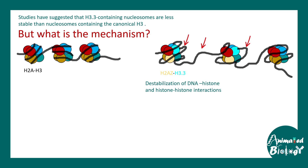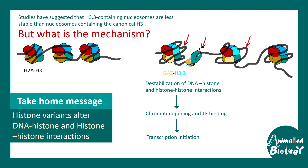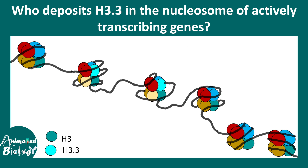As a result, the DNA is loosely wrapped around the nucleosome and sometimes it creates more accessible chromatin, which is more accessible for transcription factor binding. This can recruit RNA polymerase and start transcription initiation. The take-home message is that H3.3 is associated with transcriptionally active chromatin.